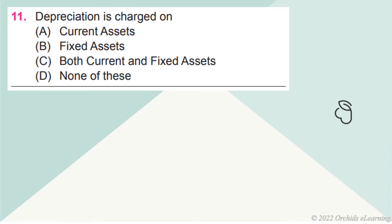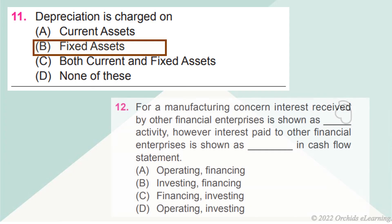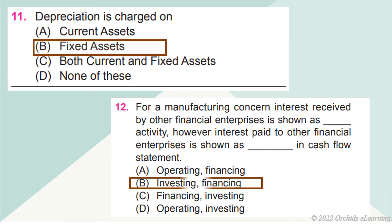Depreciation is charged on — Answer b: Fixed assets. For a manufacturing concern, interest received from other financial enterprises is shown as investing activity. However, interest paid to other financial enterprises is shown as — Answer a: In cash flow statement — Answer b: Investing and financing.